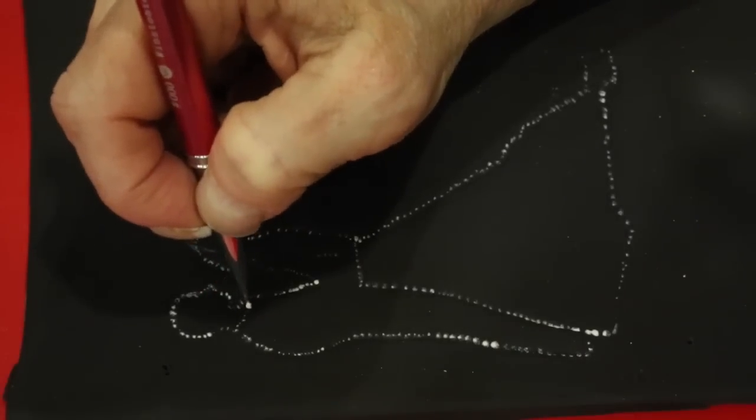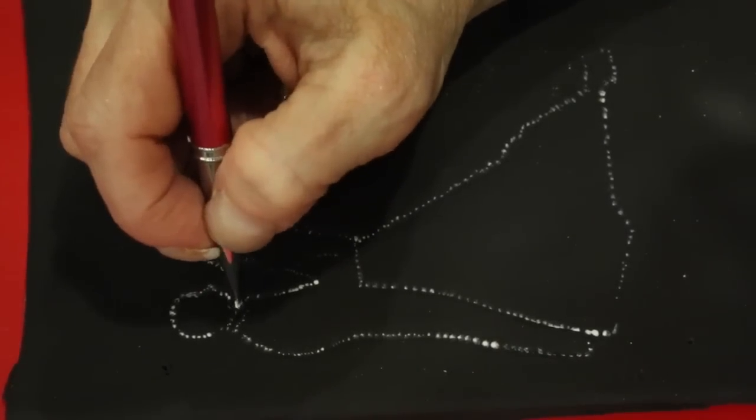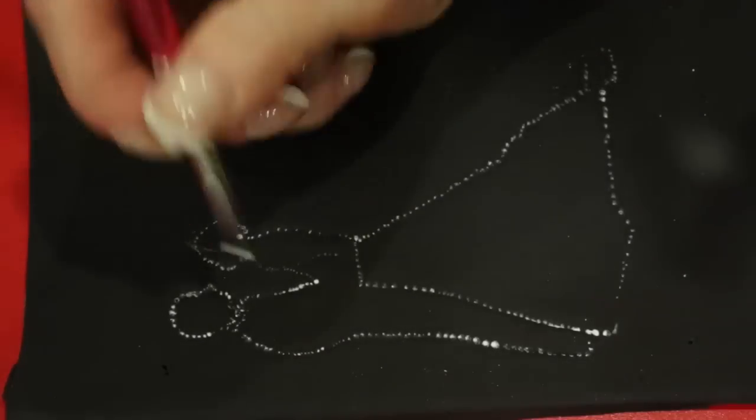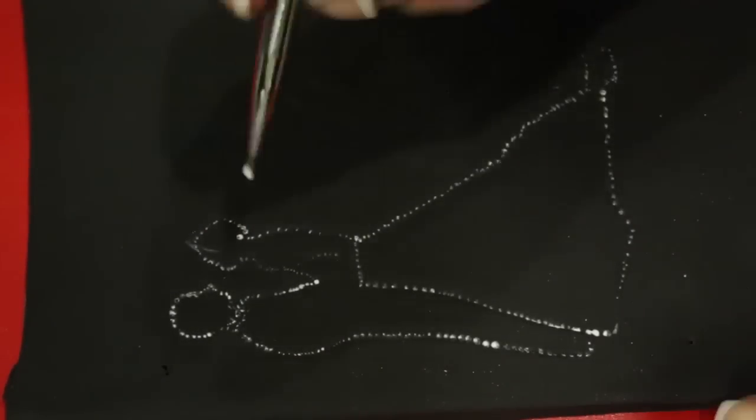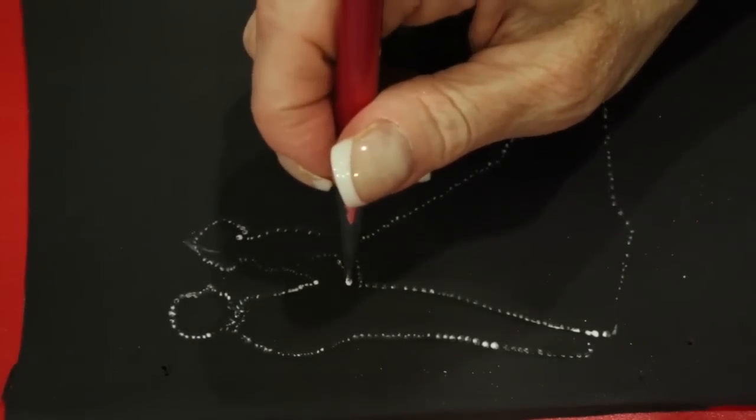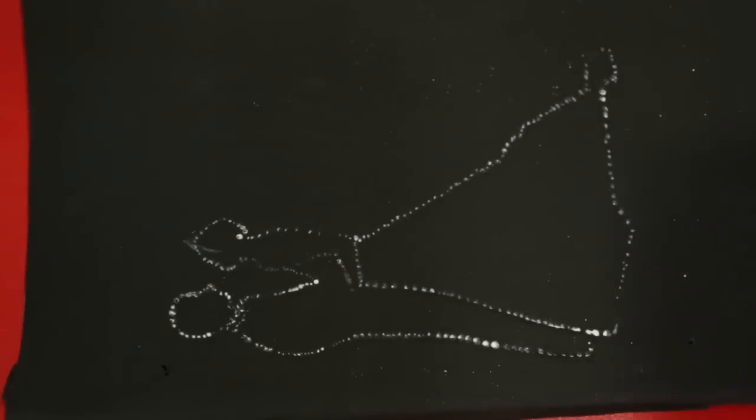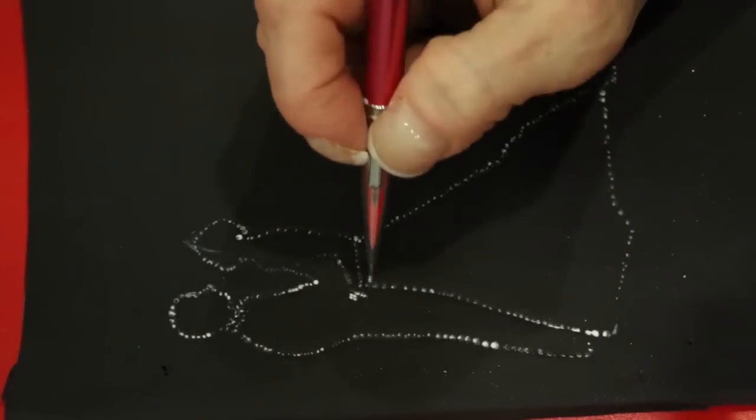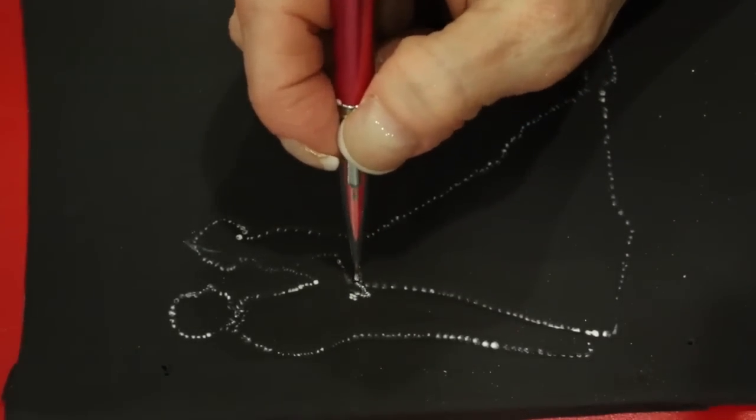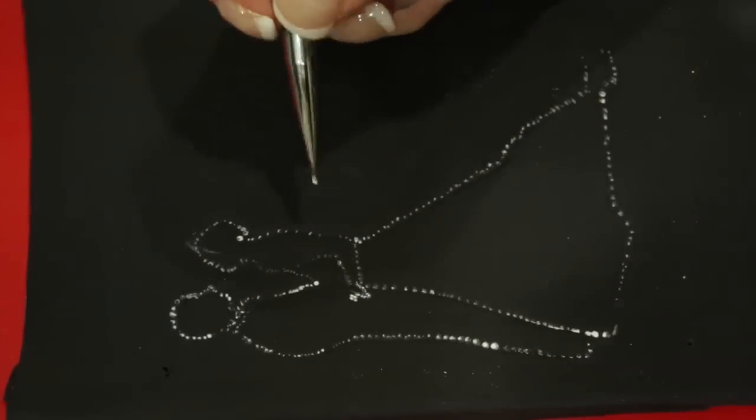Once you get the image of your outside portion done, go ahead and fill in the details. As I said, such as his collar, her arm, her thumb, and her hand.